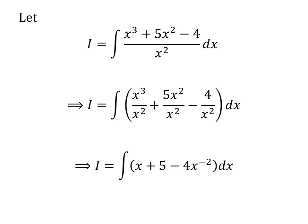We know cube of x upon square of x is equal to x, and 5 times square of x upon square of x is equal to 5, and 4 upon square of x is equal to 4 times x raised to the power of minus 2. So I is equal to integral of x plus 5 minus 4 times x raised to the power of minus 2 with respect to x.